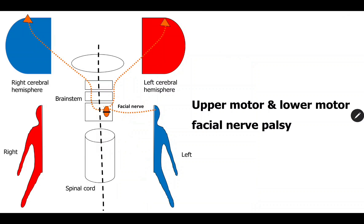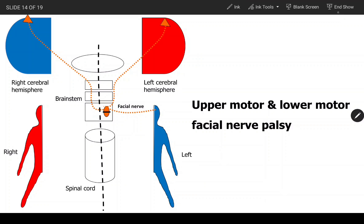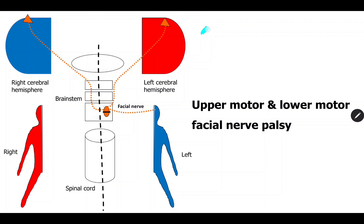Before going into further details, you should understand how cranial nerves are arranged and how the body is represented by the brain. The brain represents the body in a contralateral manner — the right side of the brain represents the left side of the body and vice versa. Cranial nerves have two types of nerve fibers: upper motor neurons, which come and stop in the brain stem, and lower motor neurons, which start in the brain stem.